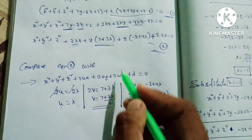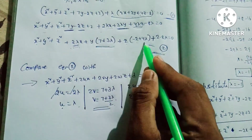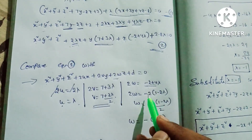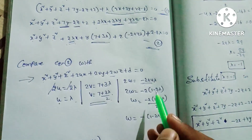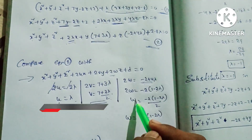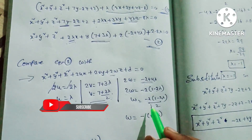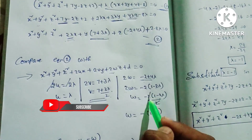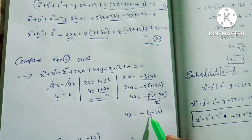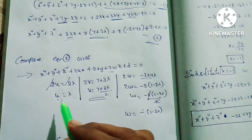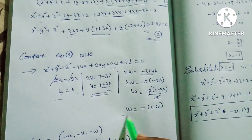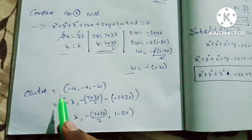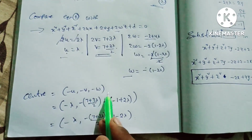So 2w = -2 + 4λ. Dividing by 2, w = (-2 + 4λ)/2 = -1 + 2λ. Now we have u, v, and w values. The center formula is: center = (-u, -v, -w).